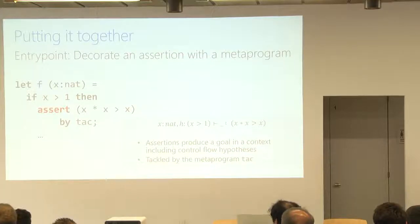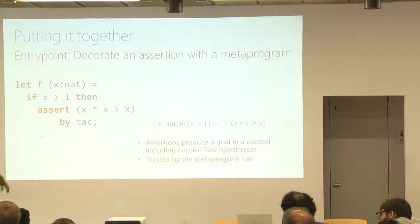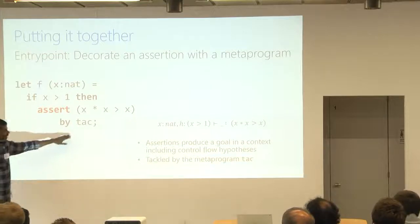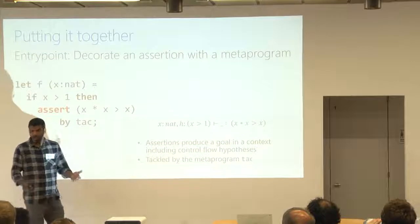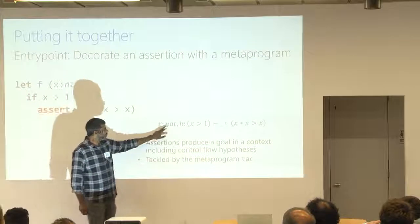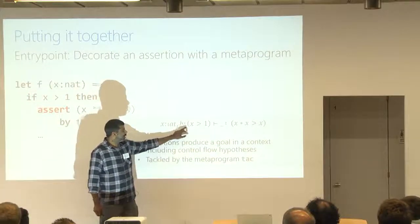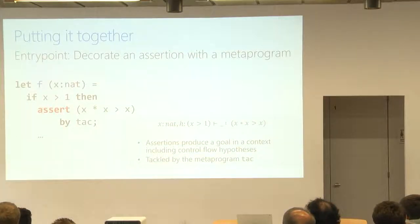There are other ways in which you can interpose meta-programs on the type checking of an F-star program. So, for instance, here's an assertion. And assertions can also now be decorated with meta-programs. Rather than saying assert, you just said assert on its own, this property would be fed to an SMT solver. But now you can say, assert this property by a particular tactic. And this tactic is now faced with solving a goal that includes all the variables in scope and all control flow assumptions up to that point. So the goal that this tactic sees is something of the form, in a context with x being a nat, and hypothesis from this if that x is greater than 1 prove for me that x squared is greater than x.